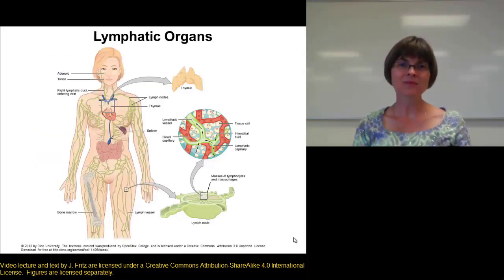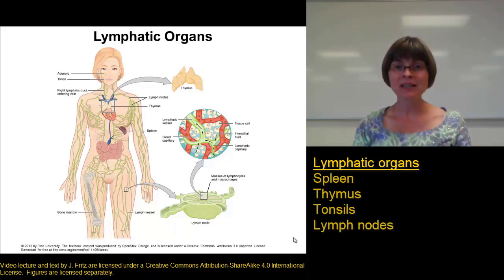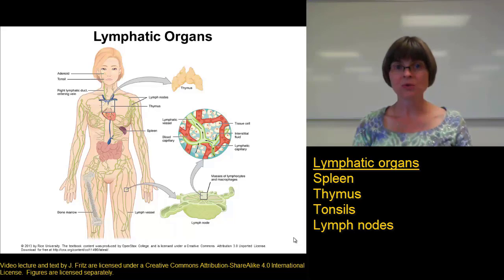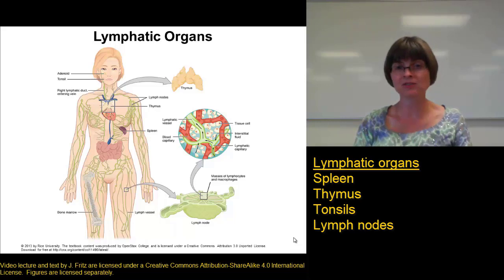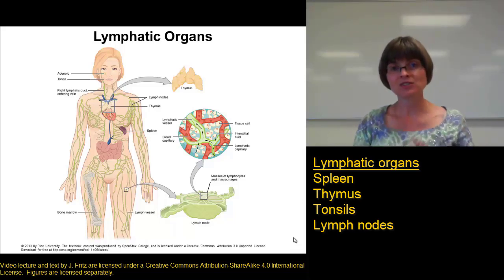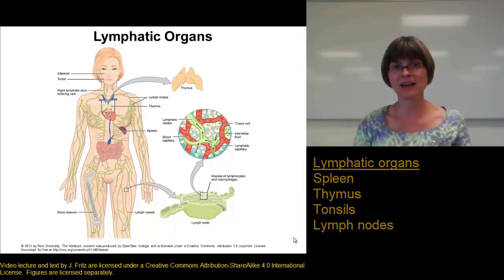Let's look at some lymphatic organs. The spleen is considered a lymphatic organ, as is the thymus, the tonsils, and the lymph nodes. What makes a lymphatic organ different from just a patch of lymphatic tissue is that the lymphatic organs are separated from the surrounding tissue — they have some sort of fibrous capsule or epithelium surrounding the organ, separating it from surrounding tissue.